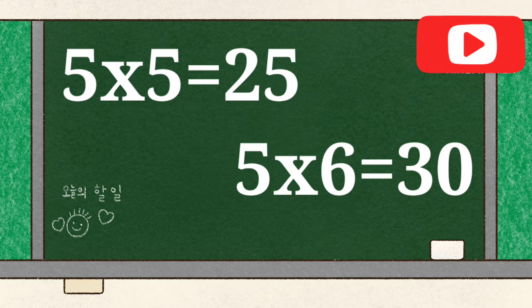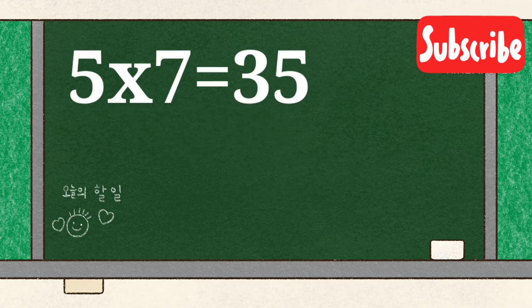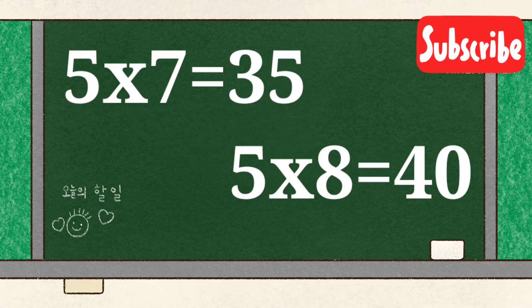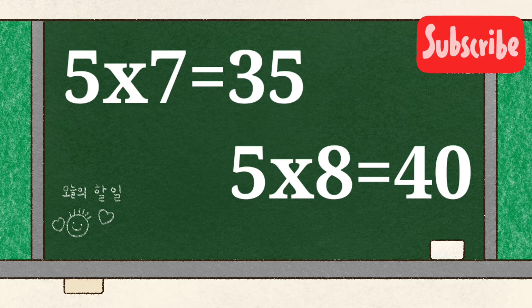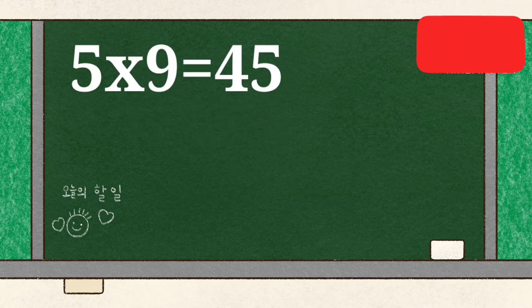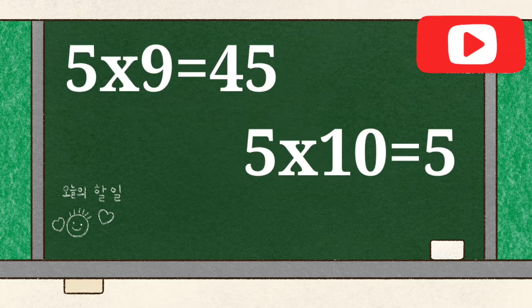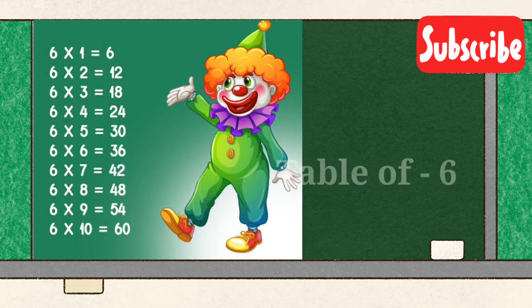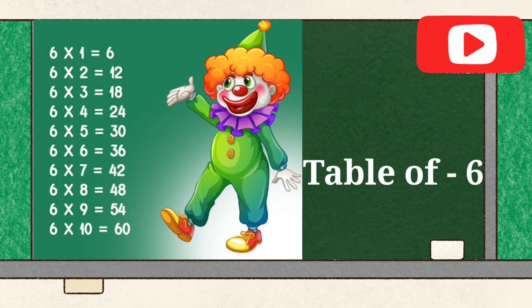5 6's are 30, 5 7's are 35, 5 8's are 40, 5 9's are 45, 5 10's are 50. Table of 6.